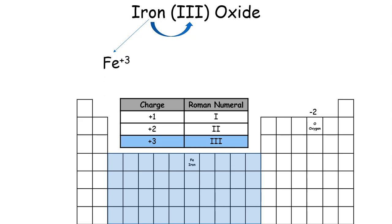So Fe will have a plus 3 charge, but it could have different charges depending on what it is bonded with. But because it's bonded with oxygen, it's going to have a plus 3 charge, which is right here in Roman numerals.